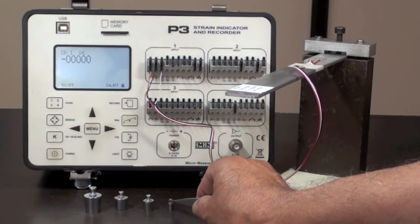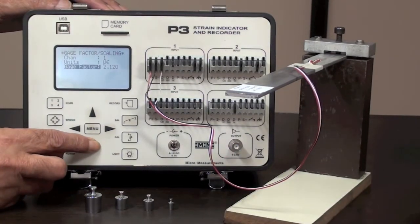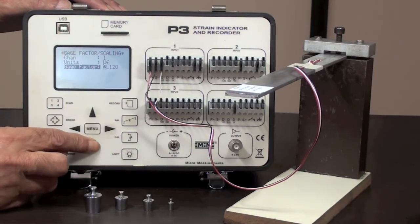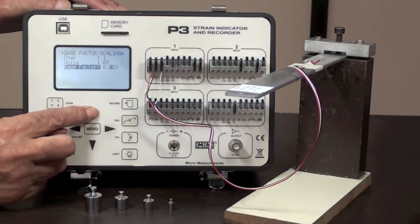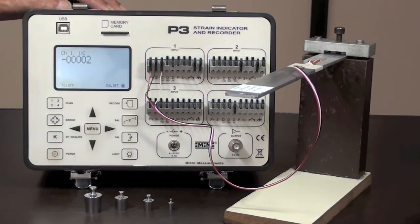However, we can increase the sensitivity of model P3 by 10 times by setting the gauge factor 10 times lower to 0.212.